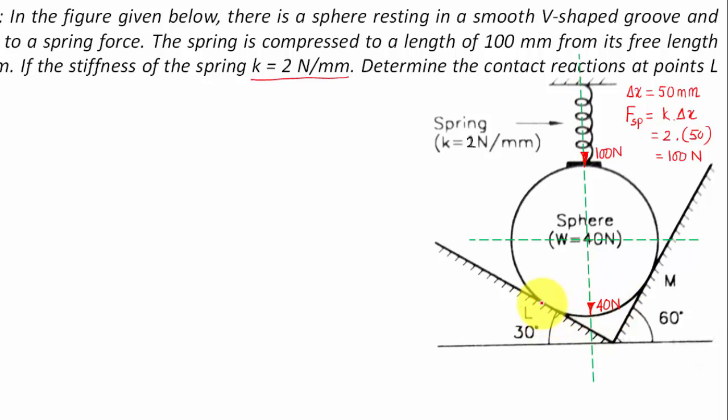Let me write this down. There is going to be this reaction over here, the name of this reaction is R_L, and we're gonna have a reaction over here also normal to this inclined surface and this is R_M. Both these reactions are gonna have their horizontal as well as vertical components.